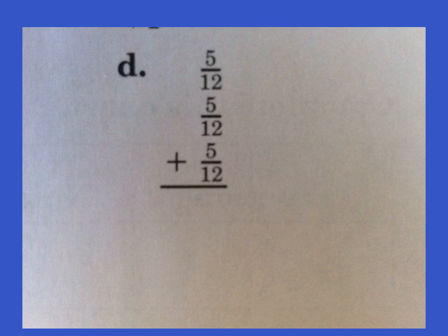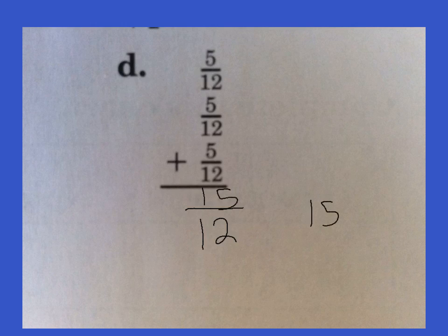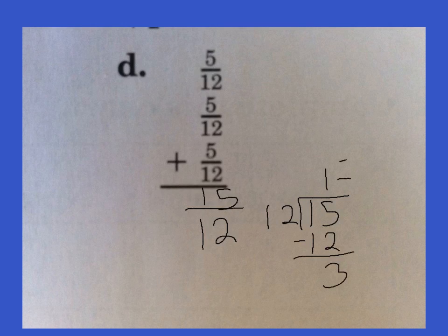D — 12 is our denominator. Five plus 5 plus 5 would be 15. So now we've got to divide 15 by 12. Twelve goes into 15 one time. One times 12 would be 12. Subtracting, we get 3. So we have 1 and 3 twelfths — that can be reduced. What goes into 3 and 12? Three does. Three goes into 3 one time, and 3 goes into 12 four times. Our reduced answer is 1 and 1 fourth.